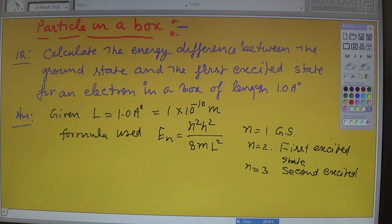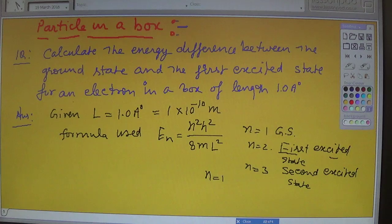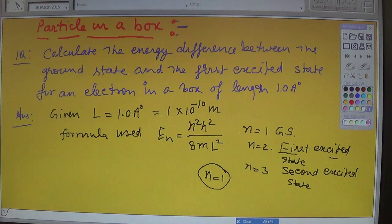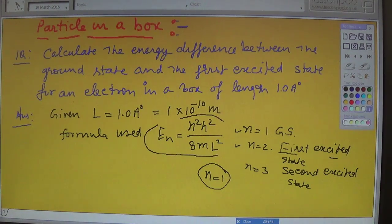The mistake students often make when solving this problem for the first excited state is they put n equals one. This is a checkpoint: n equals one corresponds to the ground state, n equals two corresponds to the first excited state.